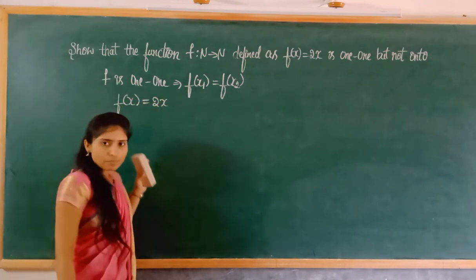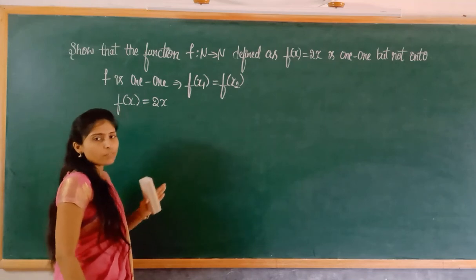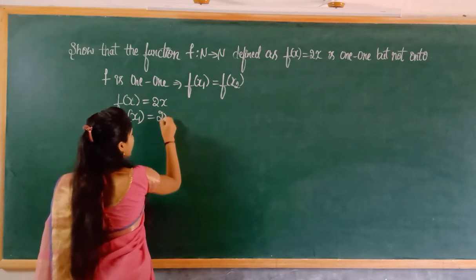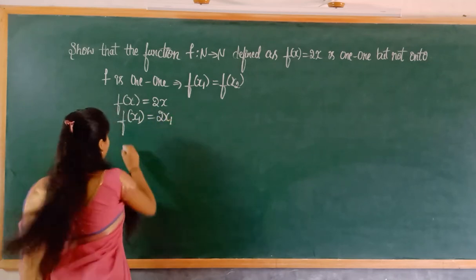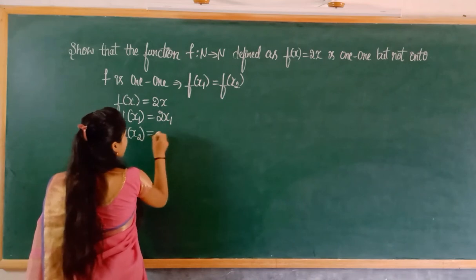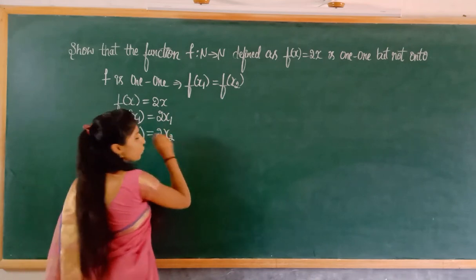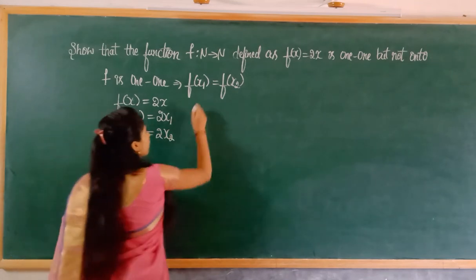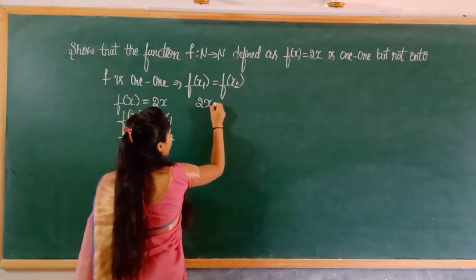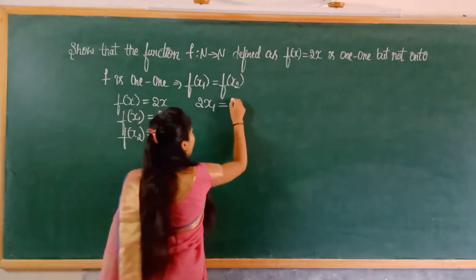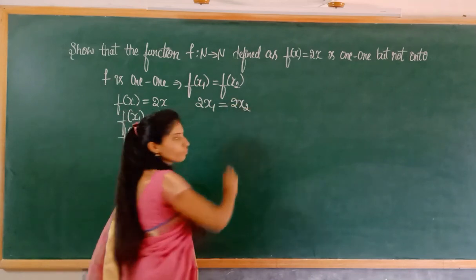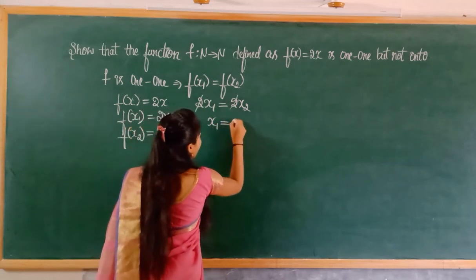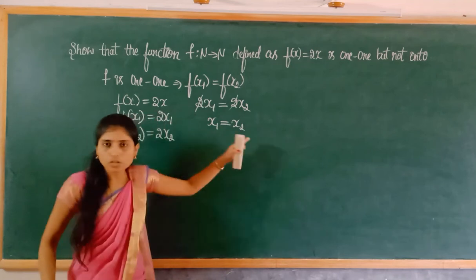In place of x, I am putting x1, so f(x1) = 2x1. In the same way, f(x2) = 2x2. Now substitute these values: f(x1) = f(x2) means 2x1 = 2x2. The 2 cancels on both sides, leaving x1 = x2.